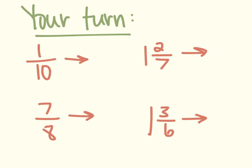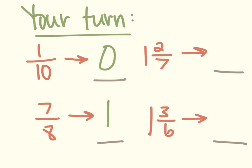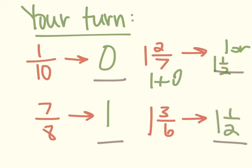Now it's your turn. You're going to estimate using benchmarks: 1 tenth, 7 eighths, 1 and 2 sevenths, and 1 and 3 sixths. You should see that 1 tenth estimates to 0, and 7 eighths estimates to 1. For 1 and 2 sevenths, 2 out of 7 — I would round down to 0, so the estimate would be 1, though you could argue 1 and 1 half. And 1 and 3 sixths is actually equal to 1 and 1 half, because 3 sixths is equivalent to 1 half.